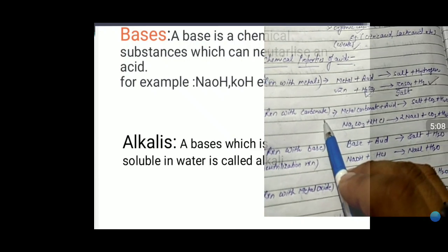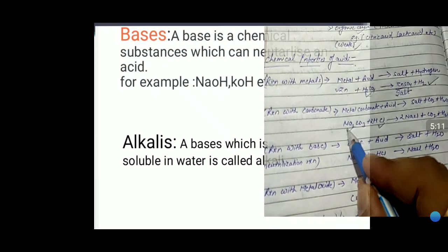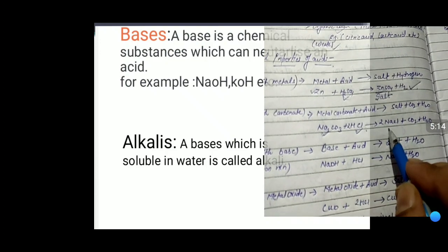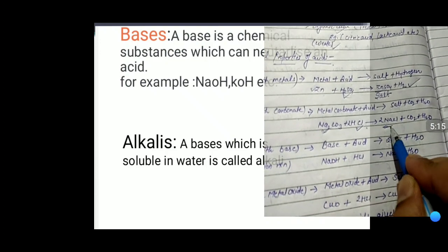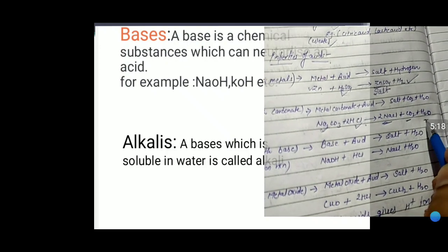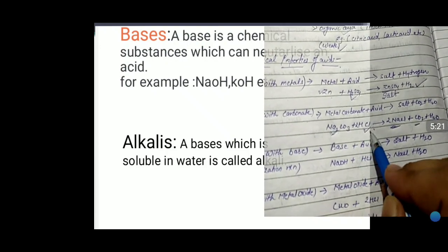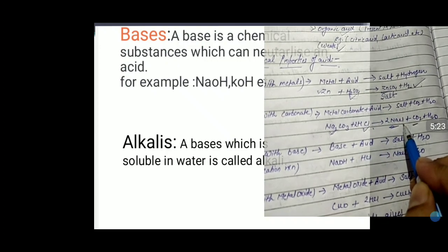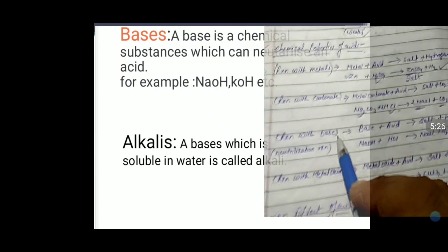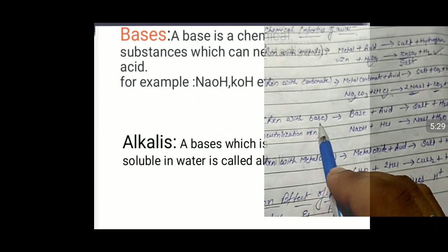Second chemical property: reaction with carbonate. When any acid reacts with a carbonate, for example sodium carbonate, it forms a salt, evolves CO₂ gas, and produces water. Sodium carbonate reacts with acid to form NaCl salt, CO₂ gas, and water.